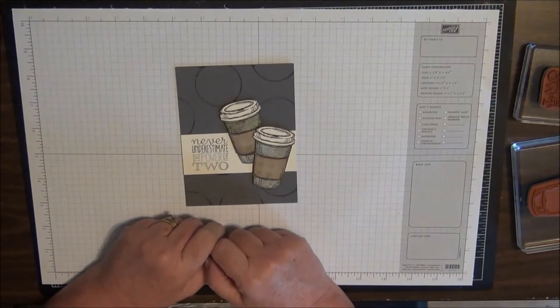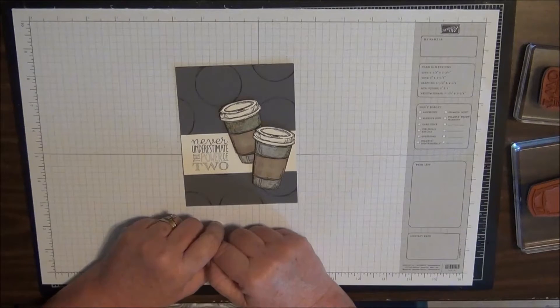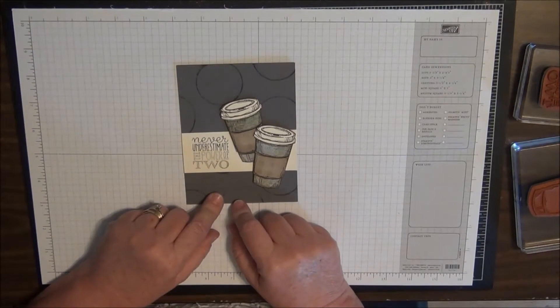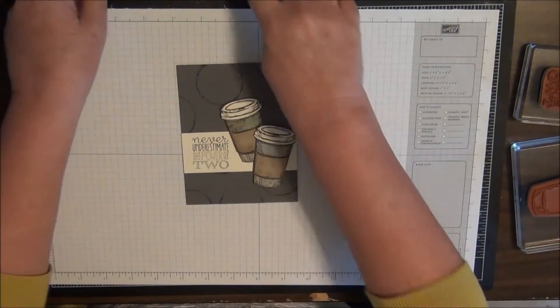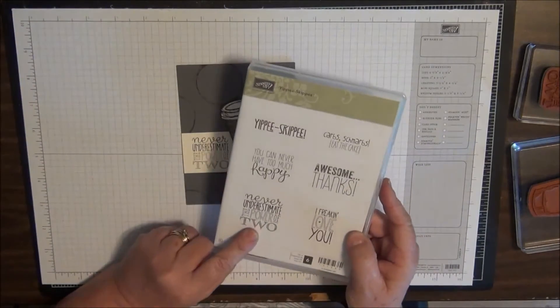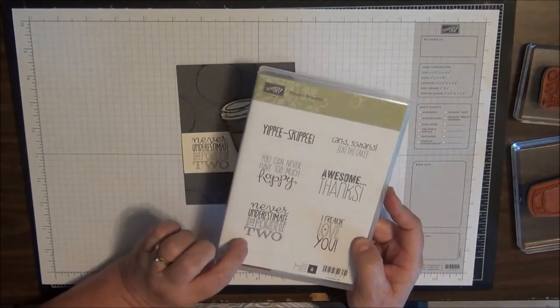I'm going to show you how to do this and I'm also going to show you something that I accidentally worked out to do these little circles. The other set that I am going to use is called Yippee Skippy.